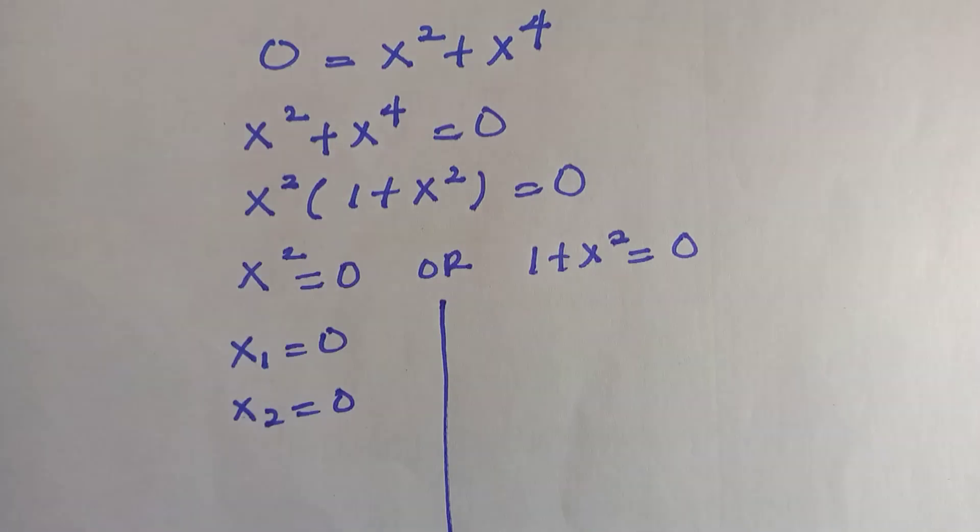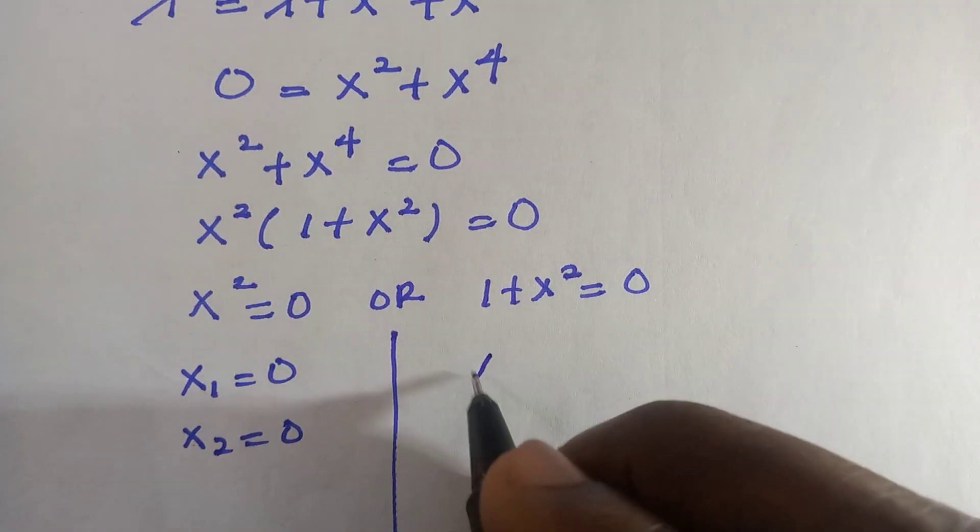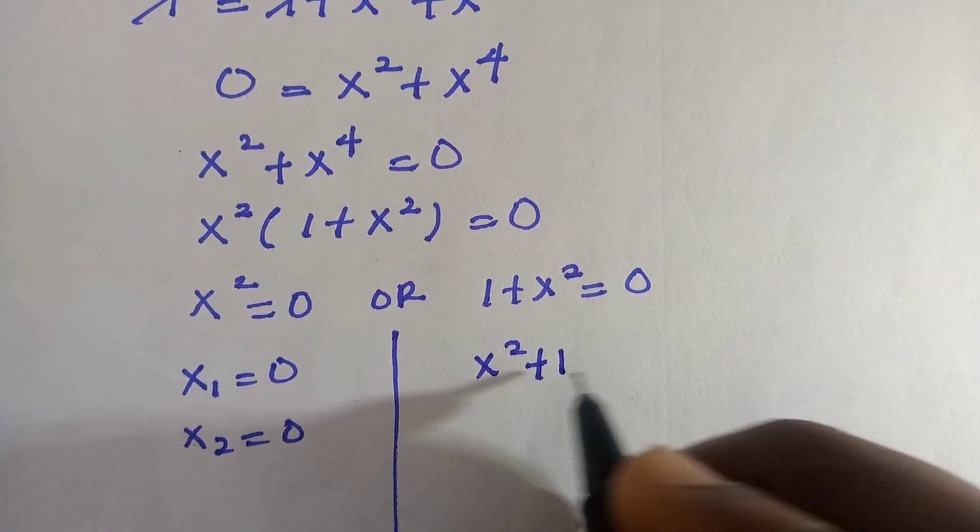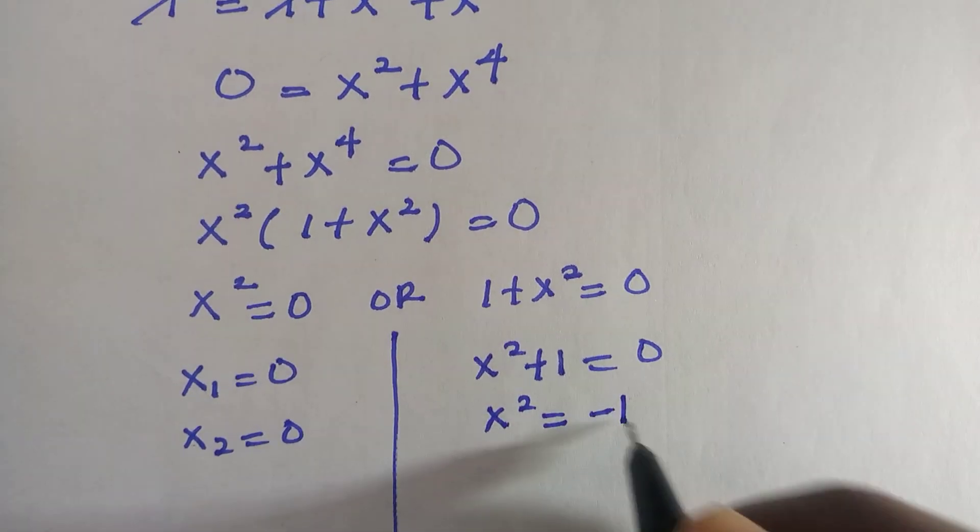And for the second one, we have x squared plus 1 equals to 0, and we have x squared equals to negative 1.